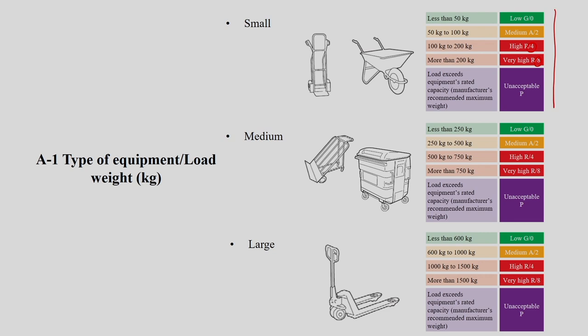The unacceptable category — color P — applies when the load exceeds the equipment's rated capacity. Every piece of equipment has a specific rated capacity; if the actual load being carried exceeds that rated capacity, you are not going to continue the job with that particular equipment. That is the unacceptable or purple category. This applies to small equipment — for example, a small wheelbarrow or small trolley or whatever wheeled pulling or pushing equipment you are using.